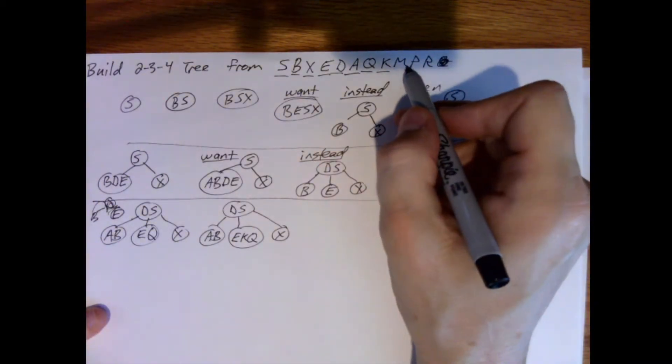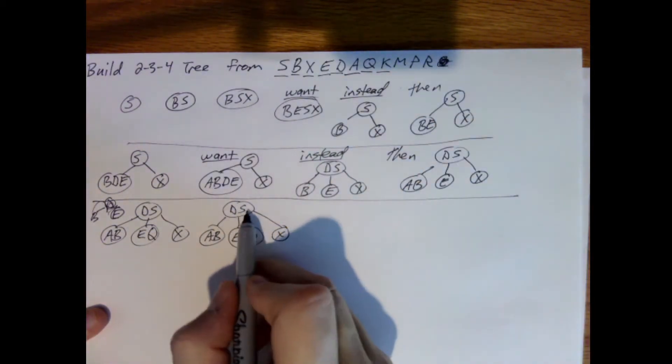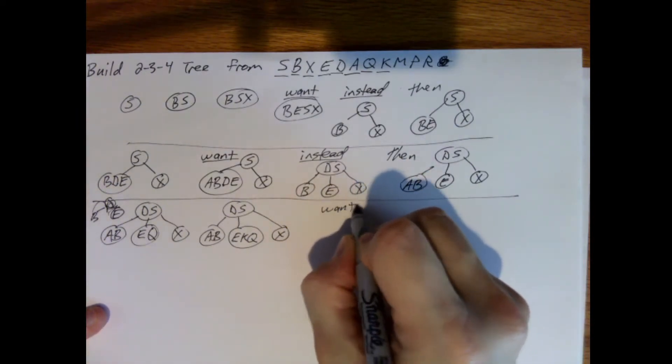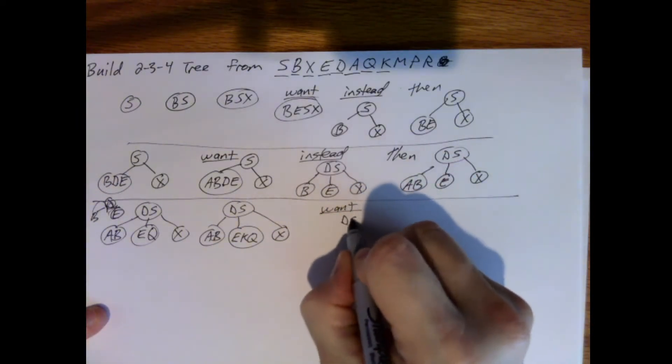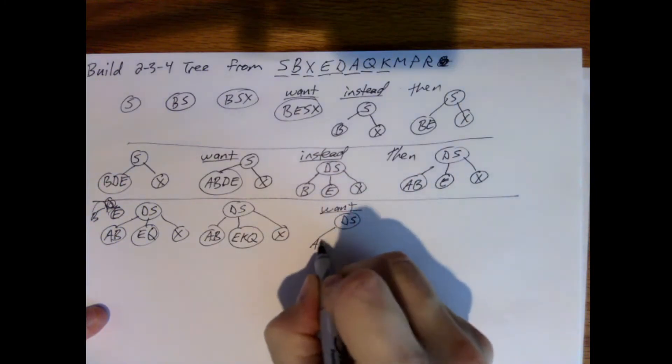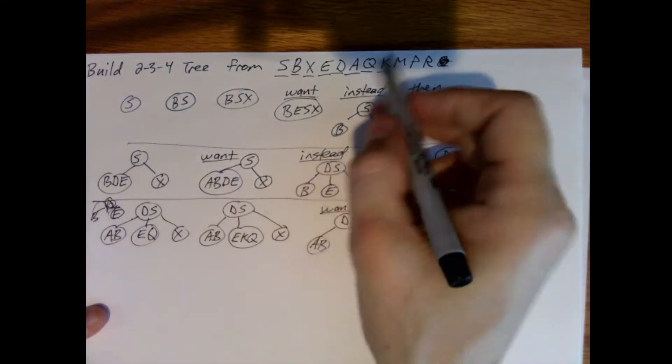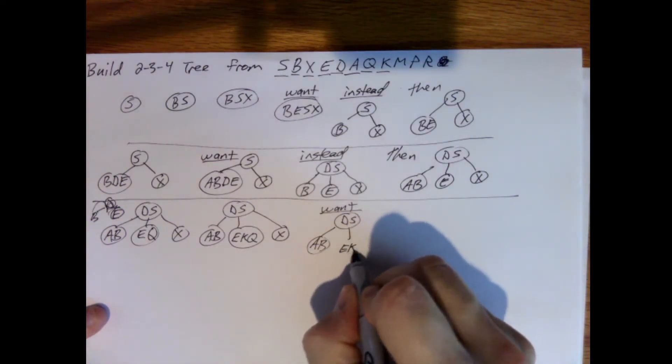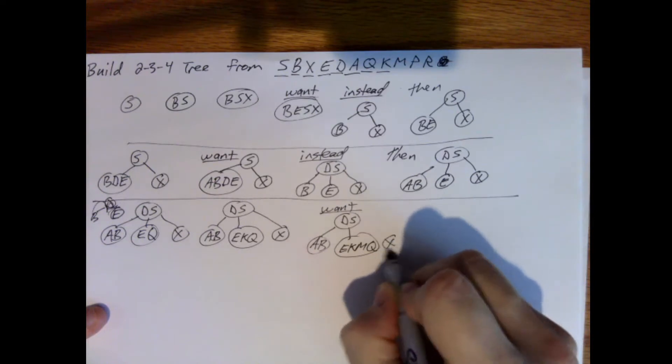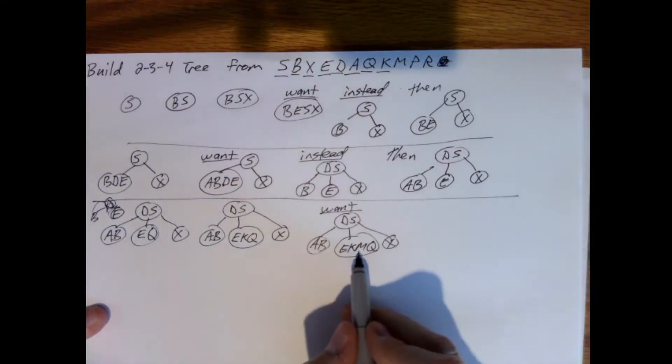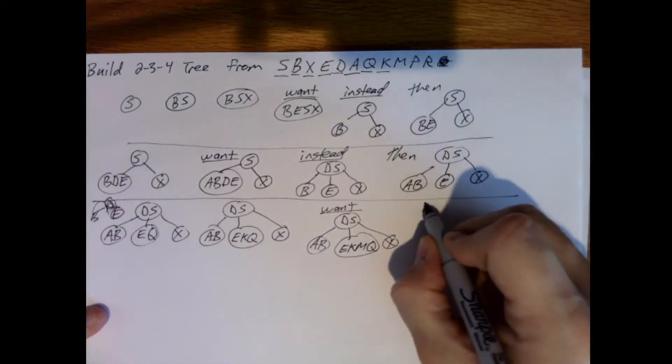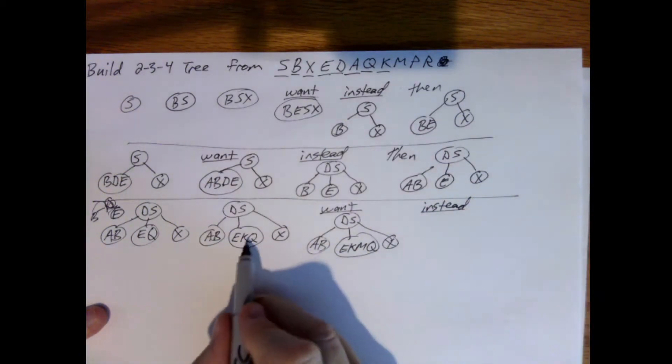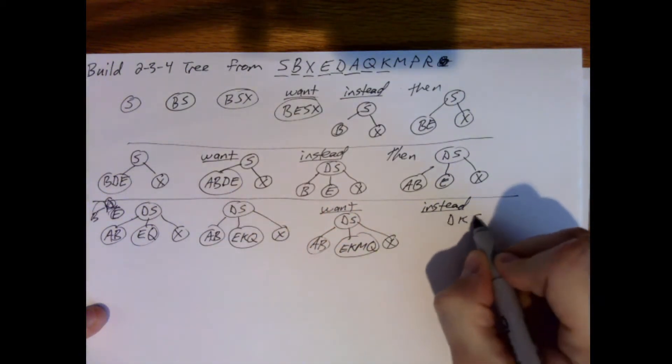And now we want to add M. M is between D and S. So here's what I want: E, K, M, Q. Four keys. I can only have three keys. So really, I need to split this. So instead, I'm going to take the K, move it up. So it becomes D, K, S.